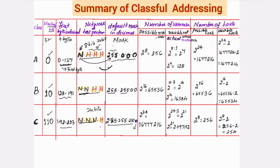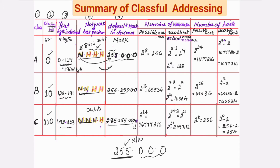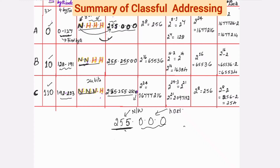The fifth column gives you information about the network portion and the host portion of Class A, Class B, and Class C. From that, you can extract how many possible networks and how many possible hosts there are. For Class A, 255.0.0.0 — we know the first 8 bits are denoting the network portion and the last 24 bits are denoting the host portion. So 2 to the power of 8, which equals 256, gives the possible networks.